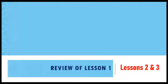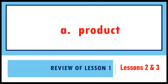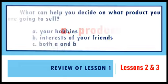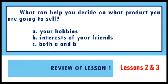Question 1: It is something that is manufactured following a process or grown and nurtured in order to be sold for profit. What is it? A. Product. B. Need. C. Service. What is your answer? If your answer is letter A, good job. You are correct.